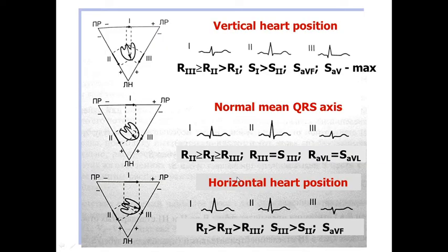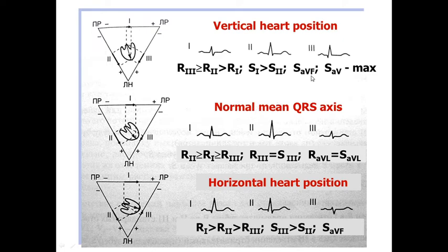Or you can use another method. If you take all three standard leads and the maximum R wave is on the 2nd lead, this belongs to a normal QRS axis, and R and S in the 3rd lead are equal. If the biggest R wave is on the 3rd lead, this belongs to the vertical heart position. For horizontal position or left axis deviation, the biggest R wave will be on the 1st lead.